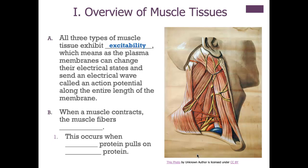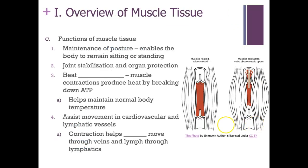When a muscle contracts, the muscle fibers are shortened. This takes place when the myosin protein pulls on the actin protein. As for the functions of muscle tissue, it helps us with our posture — allowing us to remain sitting or standing — and also provides joint stabilization, as discussed in chapter 9. It also protects our organs; for instance, your abdominal muscles cover and protect your abdominal organs where we have no skeletal bones. Additionally, muscles generate heat as a byproduct of ATP breakdown, helping to maintain normal body temperature especially in cold environments.